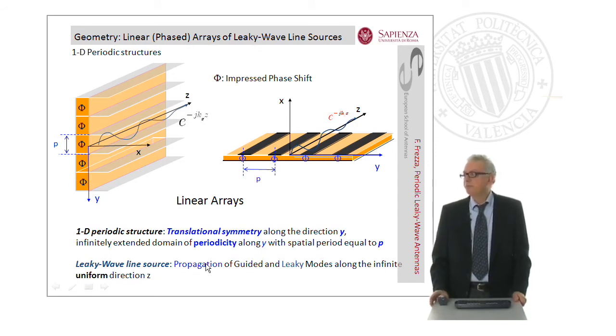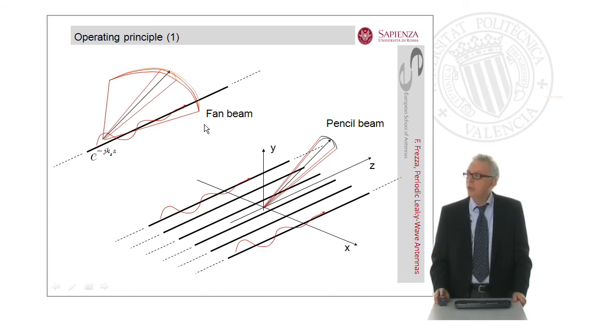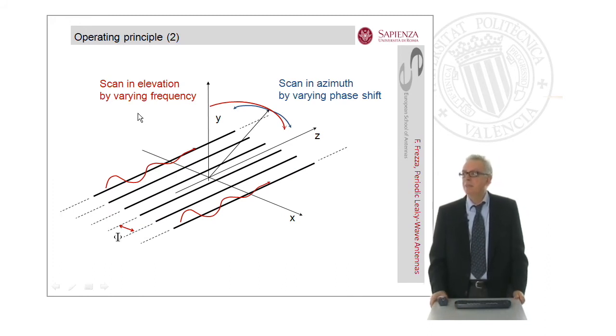The propagation of guided and leaky modes along the infinite uniform direction z has a typical geometrical form. For a single line source, we have a fan beam. That is a beam very narrow in the elevation plane but wide in the so-called cross plane or azimuth plane. Putting together some successive line sources, we have the ability to create a pencil beam, which can be scanned. The typical scan mechanism for leaky wave radiators is frequency scan, not mechanical scan. The frequency scan in elevation in the wide z plane is performed by varying the frequency, and the azimuth scan is performed by varying the phase shift.